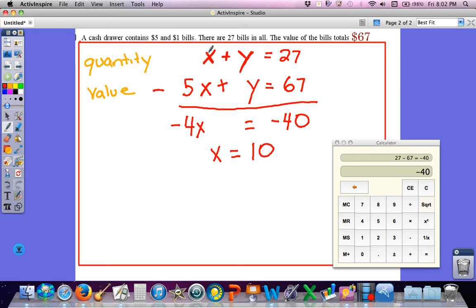When I divide both sides by negative 4, I get X is equal to 10. And remember, 10 was my value for $5 bills. So for $5 bills, there's 10 of them. To find the number of $1 bills, I'm going to put that in here. So 10 plus what number equals 27? I get 17. I'm going to check that in my bottom equation here. 5 times 10 is $50 in $5 bills, plus $17 in $1 bills equals 67. So I was able to do that problem.